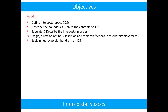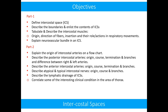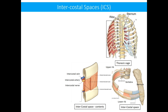Participants should also be able to describe intercostal muscles with regard to their origin, direction of fibers, insertion, and their role in respiratory movement, and explain the neurovascular bundle in an intercostal space. During part two, we will discuss the intercostal arteries, intercostal veins, azygous system of veins, typical and atypical intercostal nerves, and lymphatic drainage of intercostal spaces. At the end of part two, we will correlate some interesting clinical conditions in the area of thorax.